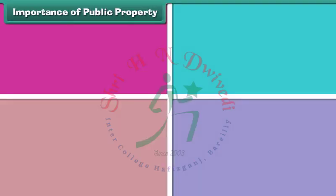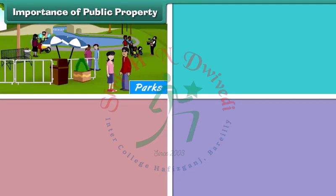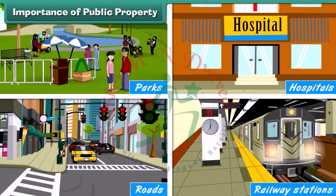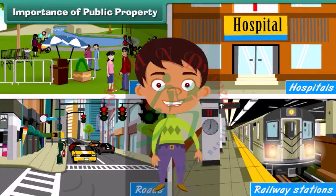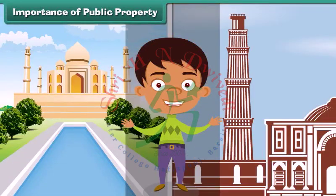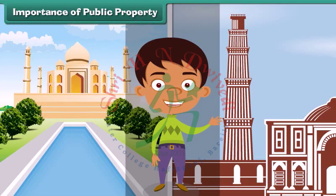Public properties like parks, hospitals, roads, and railway stations are for public welfare — they provide comfort and convenience to the public. Some public properties like historical monuments showcase the glorious history of a country and are the pride of a nation.